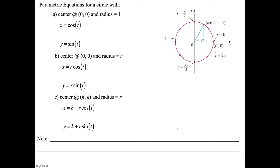For parametric equations of a circle, there are three conditions. If centered at (0, 0) with radius 1 — the unit circle — then x equals cosine t, y equals sine t. If the radius gets bigger, x equals r·cosine t and y equals r·sine t, stretching the radius from 1. If the center is at (h, k) with radius r, then you add h to the cosine term and k to the sine term: x equals h plus r·cosine t, y equals k plus r·sine t.